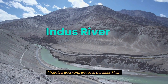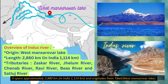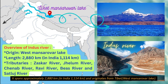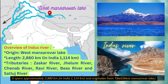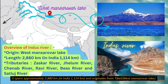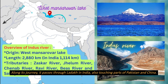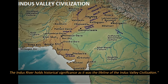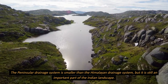Traveling westward, we reach the Indus river, spanning approximately 2,880 kilometers, of which 3,114 kilometers is present in India. It originates from west Mansarovar Lake in Tibet. The famous tributaries are Zanskar river, Jhelum river, Chenab river, Ravi river, Beas, and Sutlej. Along the Indus's journey, it passes through Ladakh in India, also touching parts of Pakistan and China. The Indus river holds historical significance as it was the lifeline of the Indus Valley Civilization.